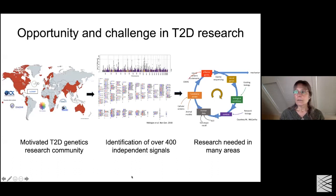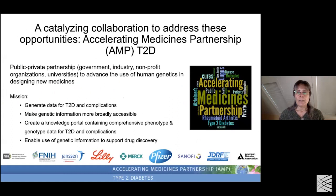Many independent signals were being identified - today there are over 400, back then there were maybe 100. There was research necessary in many different areas, not only genetics, but also functional studies to understand what these genes do and how they're involved in diabetes.